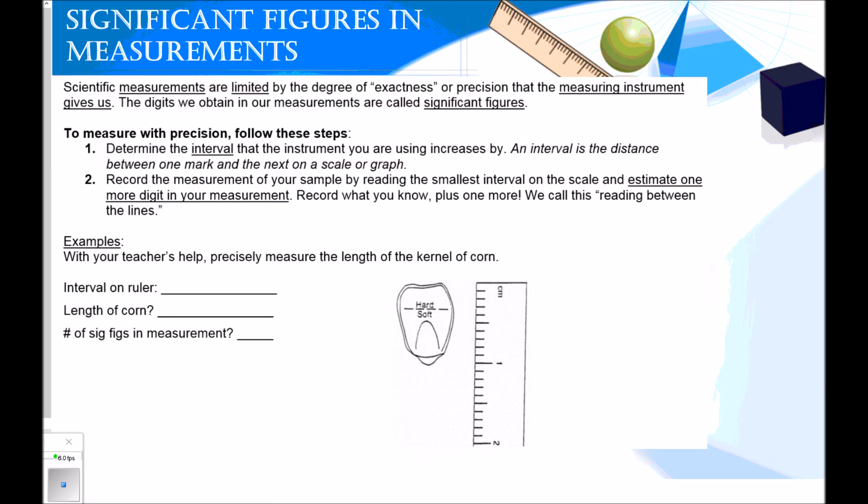Now I'm going to move on to significant figures. Scientific measurements are limited by the degree of exactness or precision that the measuring instrument gives us. The digits we obtain in our measurements are called significant figures. Something I want to emphasize right here is that significant figures only exist if you're measuring something with a measuring instrument. If you are counting something, they don't exist. It's only if you're measuring something with a ruler or a graduated cylinder or a piece of equipment that significant figures exist.